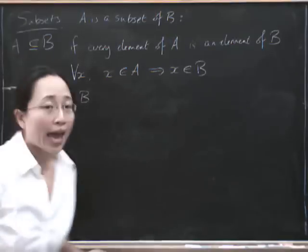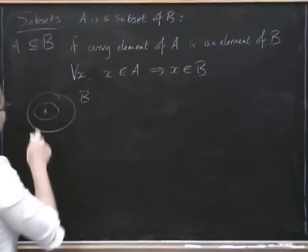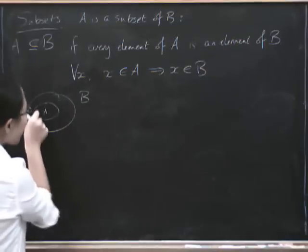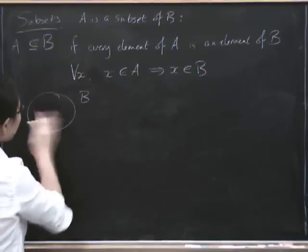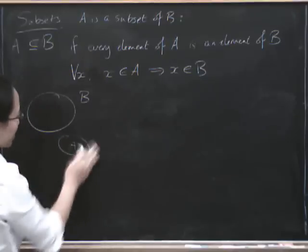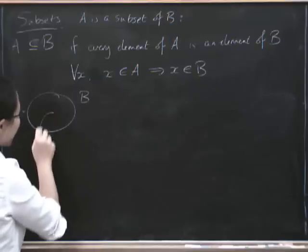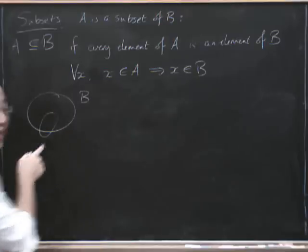This is kind of the picture of A being a subset of B. So in order for that not to be true, we only have to have one bit of A sticking out. It doesn't necessarily have to be the entire of A sticking out, it just has to be some part of A sticking out.